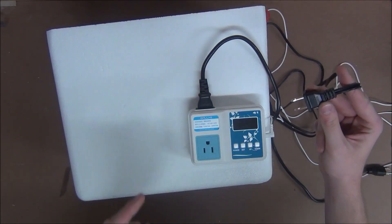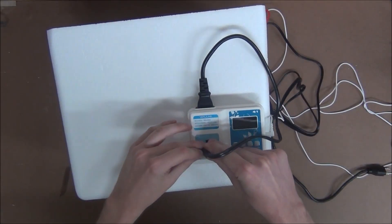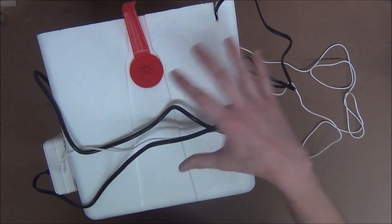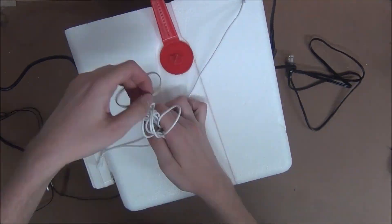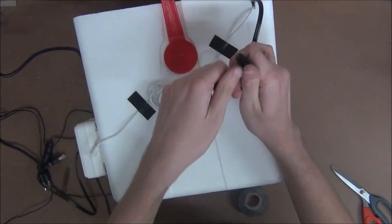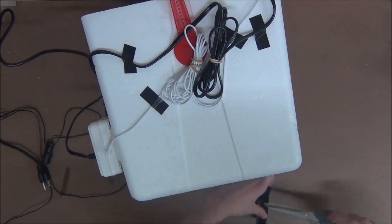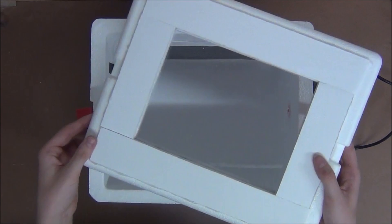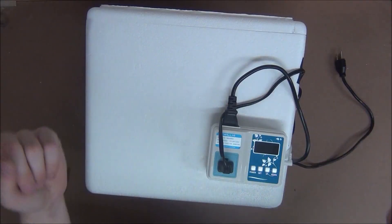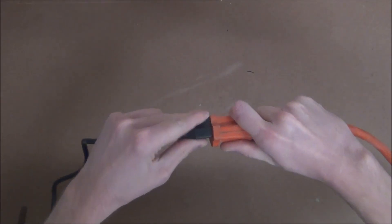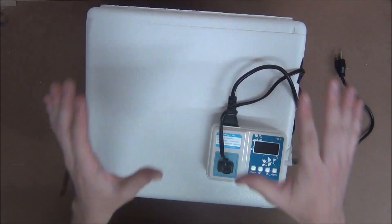Now we'll plug in our heater to our temperature controller and straighten up the extra cords on the side. Now once we put on the lid and plug in the temperature controller, your incubator will be complete and ready for eggs.